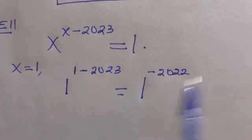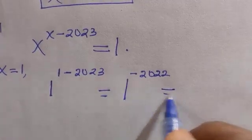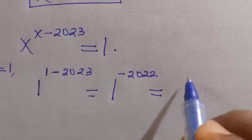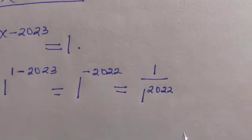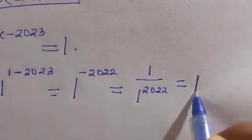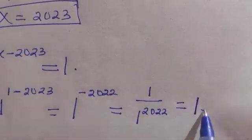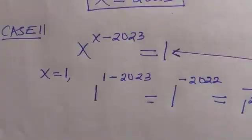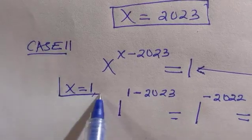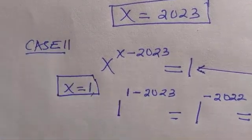We know 1 raised to a negative power is 1 divided by 1 raised to power 2022. Since any power of 1 equals 1, the left hand side equals the right hand side when X equals 1.